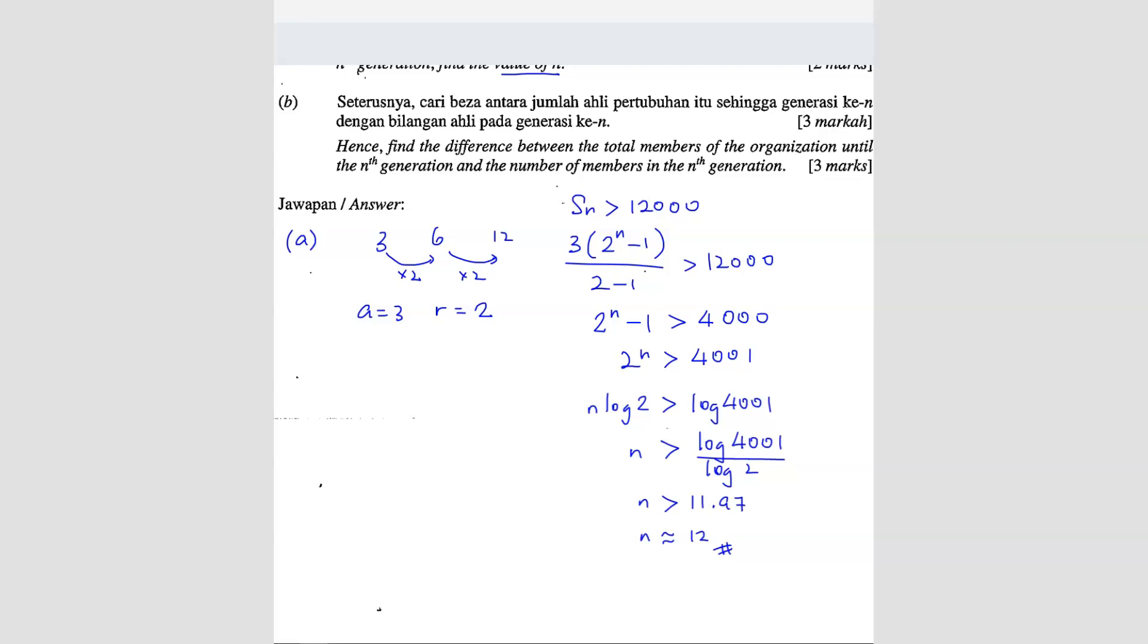Question B. Hence, find the difference between total number of organization until the n term, so that means SN, and the number of members in the n term. So that means question B.